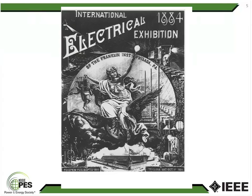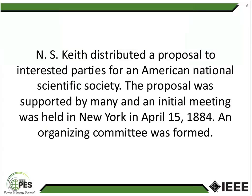In late 1884, there was scheduled in the fall at Philadelphia an international electrical exhibit where people would come in and exhibit whatever wares they wanted to show and sell. At the same time, there was a man called Nathan S. Keith, a consultant located in the Philadelphia area. He was a trained physicist but also an inventor with a lot of interest in electrical engineering. He distributed a proposal to interested parties for an American national society, and an initial meeting was held at the headquarters in New York City of the American Society of Civil Engineers on April 15th, 1884.